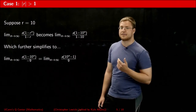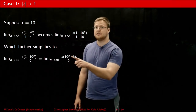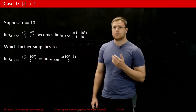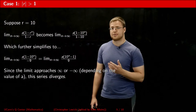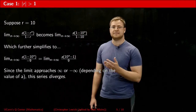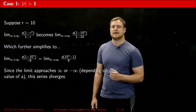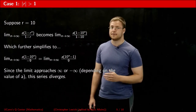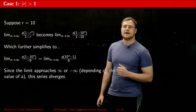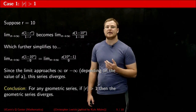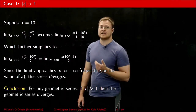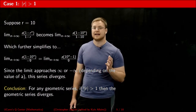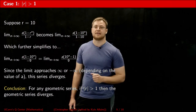Now, we're taking the limit as n goes to infinity. 10 raised to n, as n goes to infinity, is infinity. What happens then is that this limit is either positive infinity or negative infinity. If a is positive, then the limit is positive infinity. If a is negative, then the limit is negative infinity. Whatever a happens to be, we can now safely conclude that if the absolute value of r is anything greater than 1, whether it's 2 or 3 or anything else, then the series is going to diverge.